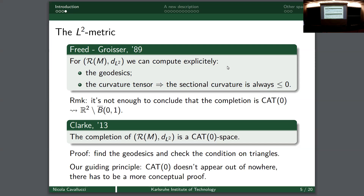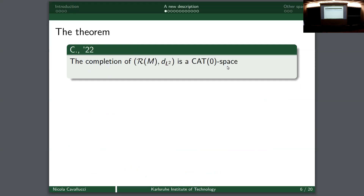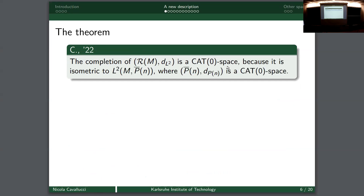When Alexander Lytchak presented me this problem, he said it seems strange that this is CAT(0) without any real reason behind it, so there must be a more conceptual proof of the fact that this completion is CAT(0). That's what we are going to do: present a motivation - not just a computation - for why this space is CAT(0). This theorem states that the completion is CAT(0) because it is isometric to the space of L2 maps from our manifold M to a fixed CAT(0) space P̄_n that I can explicitly describe.